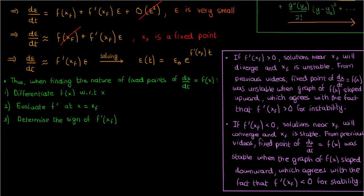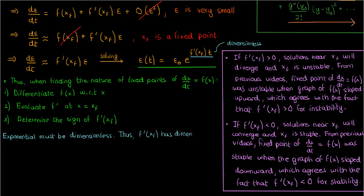There's another important fact you can glean from the exponential solution for epsilon. The coefficient of time inside the exponential is f'(x_f). Because the exponential must be dimensionless, f'(x_f) must have the dimension of 1/time, which means we can write 1/|f'(x_f)| as a time constant tau with dimensions of time. This tau is called the characteristic timescale. The smaller this timescale, the greater the magnitude of f'(x_f) and the more quickly perturbations decay or grow. The larger this timescale, the slower perturbations change.